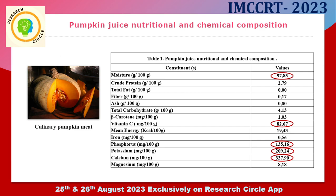The juice obtained from pumpkin meat was subjected to physical-chemical evaluation and the results are given in this table. We found that this juice was characterized by a higher amount of moisture, higher amount of vitamin C, phosphorus, potassium, and calcium.